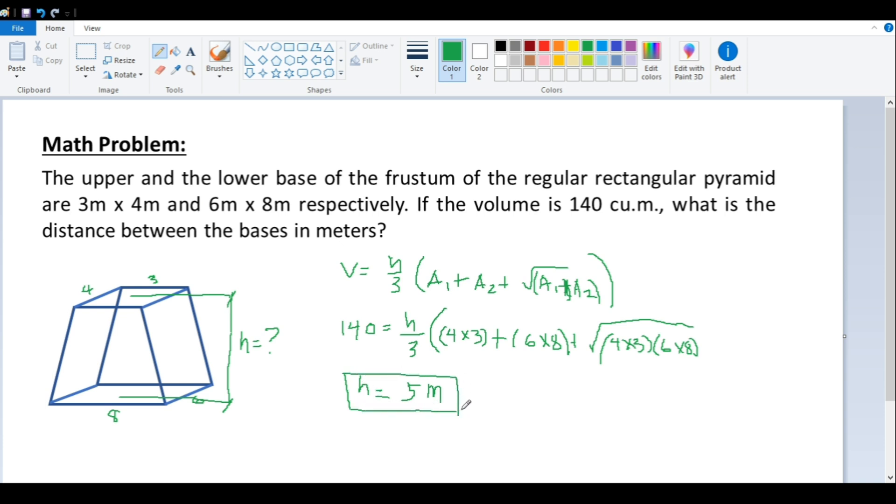So this is our answer: h is 5 meters. Having the given volume is 140 and the dimensions for the upper and the lower are also given, we could easily get the height of this frustum by memorizing this volume formula of the frustum of a regular rectangular pyramid.